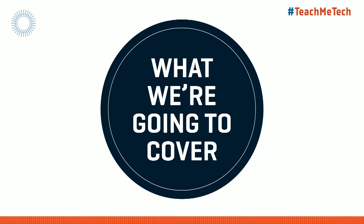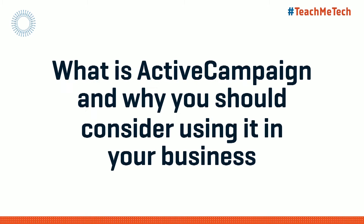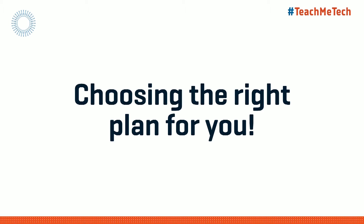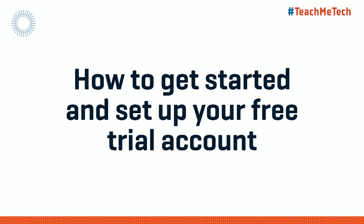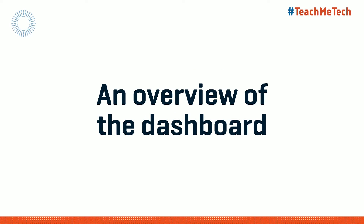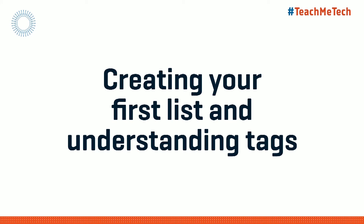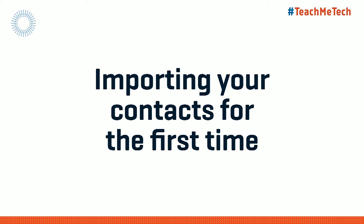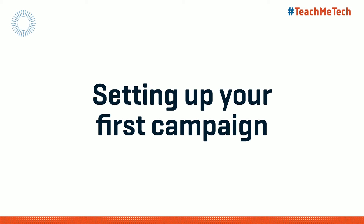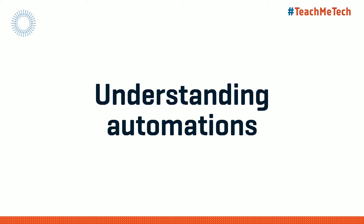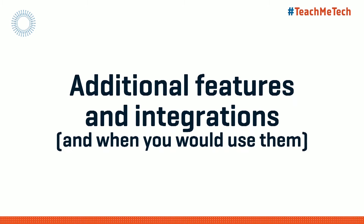What are we going to cover on today's episode about ActiveCampaign? First: what is ActiveCampaign and why you should consider using it in your business. How to choose the right plan for you and your business, not only based on price but also based on functionality. How to get started and actually set up your free trial account. An overview of the dashboard. Creating your first list and understanding tags. Importing your contacts for the first time. Setting up your first campaign. Understanding automations and how they work. And finally, some additional features and integrations and when you might want to start using those with your business.